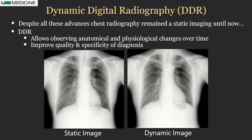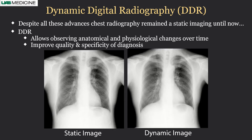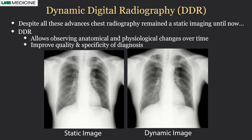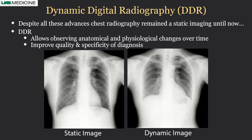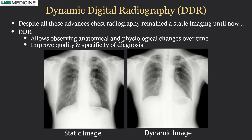Despite all these advances, we were still not there until we saw these images. Dynamic digital radiography is basically evaluating or looking at images which are moving — the patient is free-breathing during image acquisition. This allows evaluation of not only anatomic but also physiologic changes over time when you look at the entire lung over the respiratory and cardiac cycles. It can also improve the quality and specificity of diagnosis: if you are suspicious on static images, the rapidly moving chest radiographs can help you exclude or include a pathology.